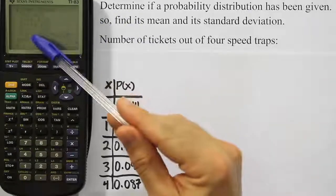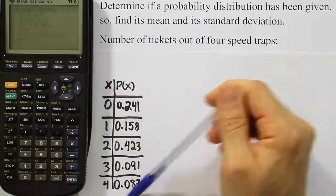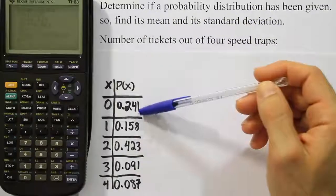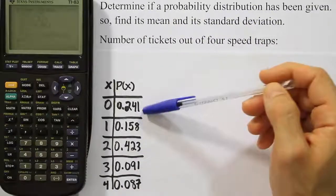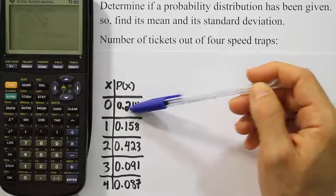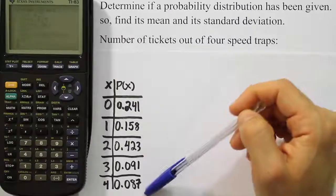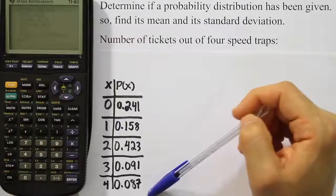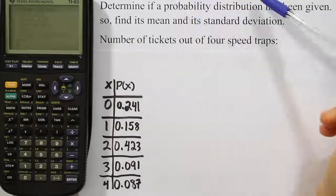So because it adds up to 1, we know that these probabilities sum to 1 and it means it's a probability distribution, assuming that all these probabilities are reasonable. We can't have anything over 1, we can't have anything negative. As long as that's true, that all of these are normal probabilities, and when they sum, they sum up to 1, it means it's a probability distribution.